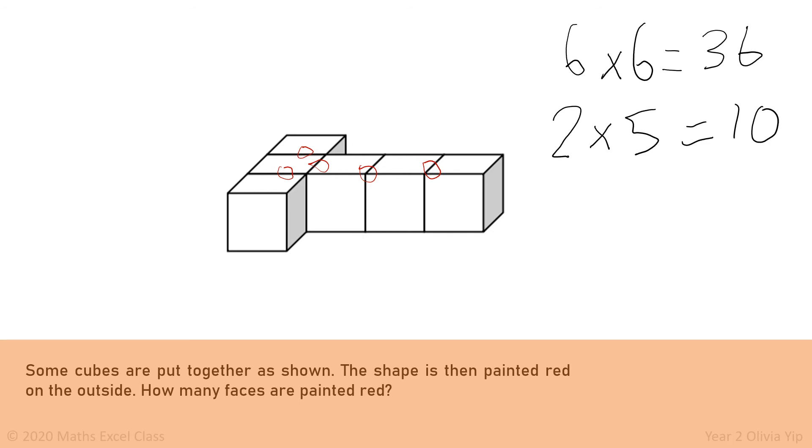Then we want to find out how many faces are painted red. So we write thirty-six minus ten. Thirty-six minus ten equals twenty-six faces.